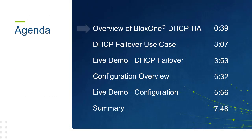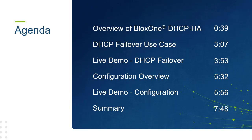In this video, we'll take a look at an overview of the DHCP High Availability feature. Then I will show and explain a use case for this feature. After that, we will cover how to set up this feature and show the configuration with a live demo. And finally, we will recap with a short summary.